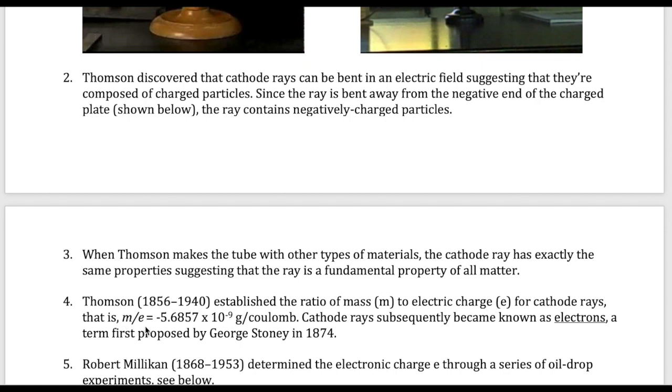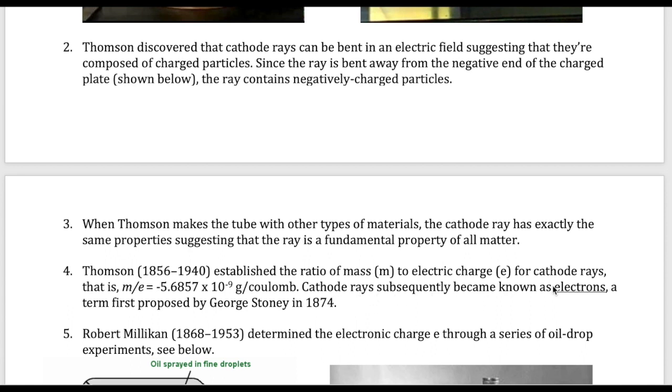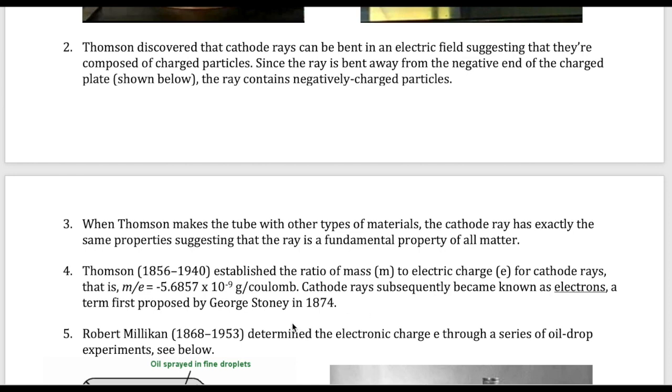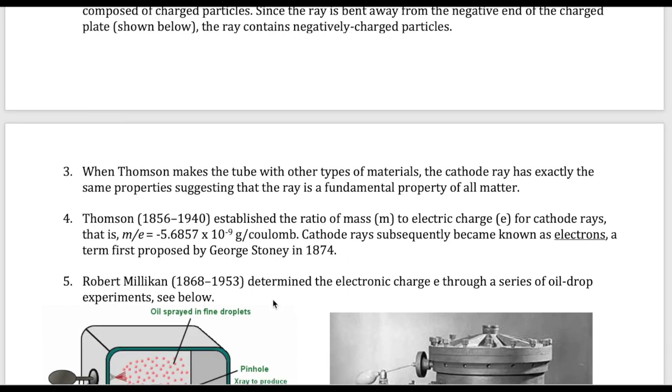And that ratio, which is given the symbol m over e, where m is mass and e is the electrical charge, is this number right here: negative 5.6857 times 10 to the minus 9 grams per Coulomb. Now this number is not as important as you'll see in a second. Later on, these cathode rays is called electrons. And now it stands for the negatively charged particles that we find in atoms. And that name was first proposed by Stoney.